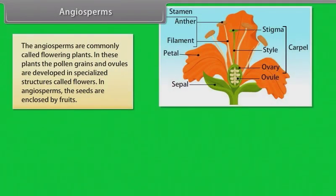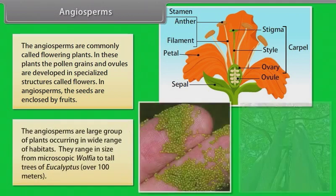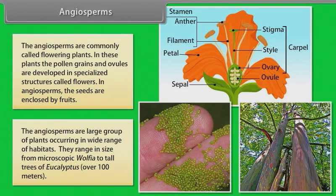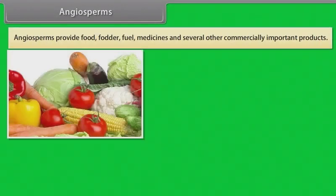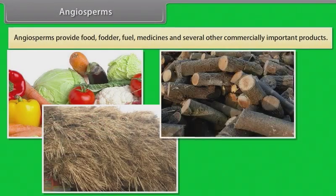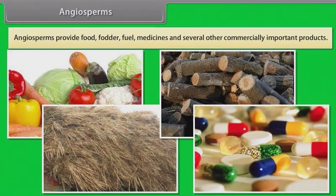The angiosperms are commonly called flowering plants. In these plants the pollen grains and ovules are developed in specialized structures called flowers. In angiosperms the seeds are enclosed by fruits. The angiosperms are large group of plants occurring in wide range of habitats. They range in size from microscopic Wolfia to tall trees of Eucalyptus over 100 meters. Angiosperms provide food, fodder, fuel, medicines and several other commercially important products.